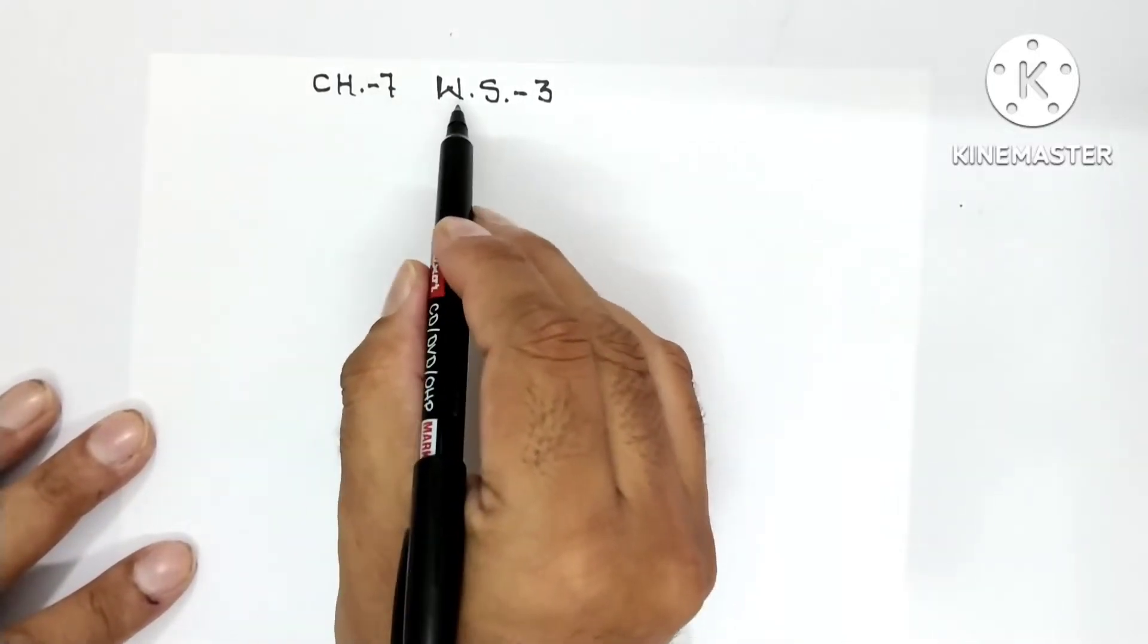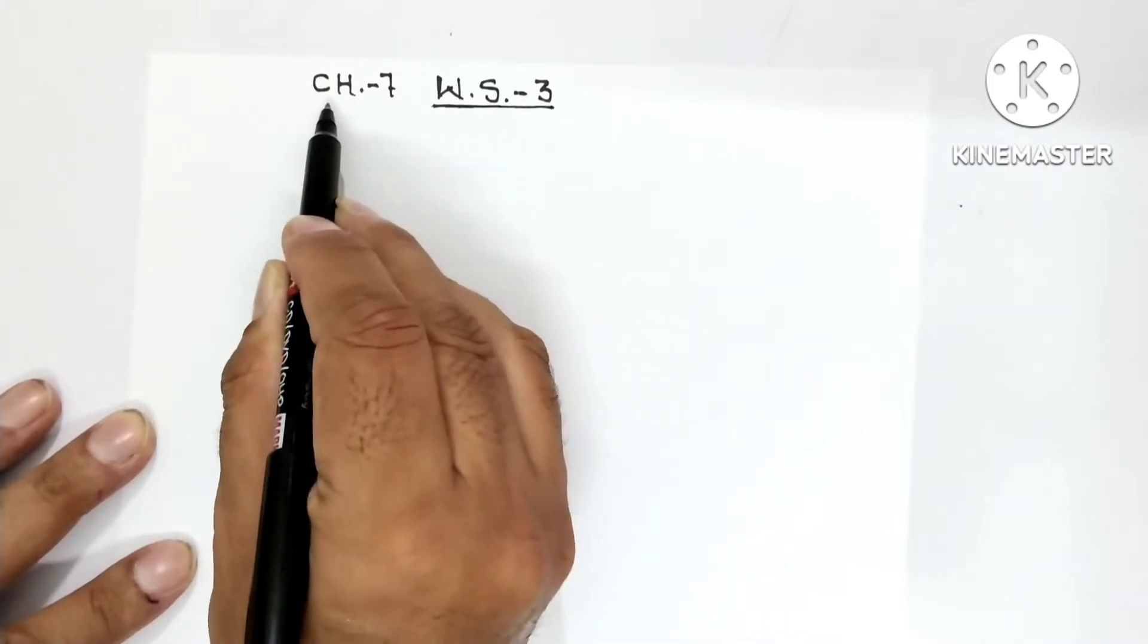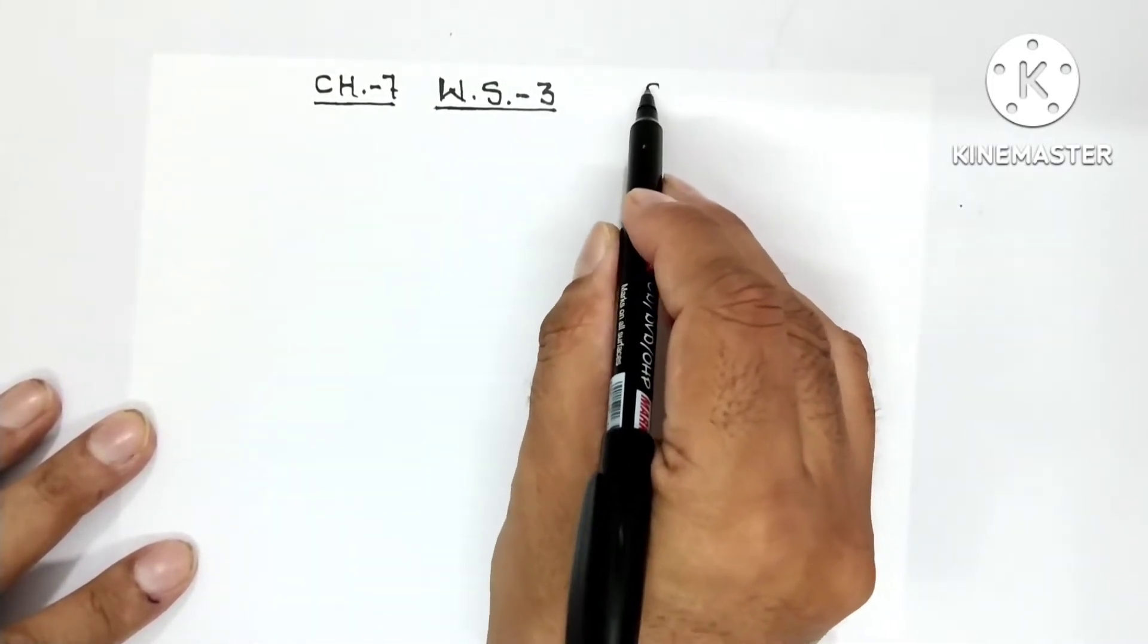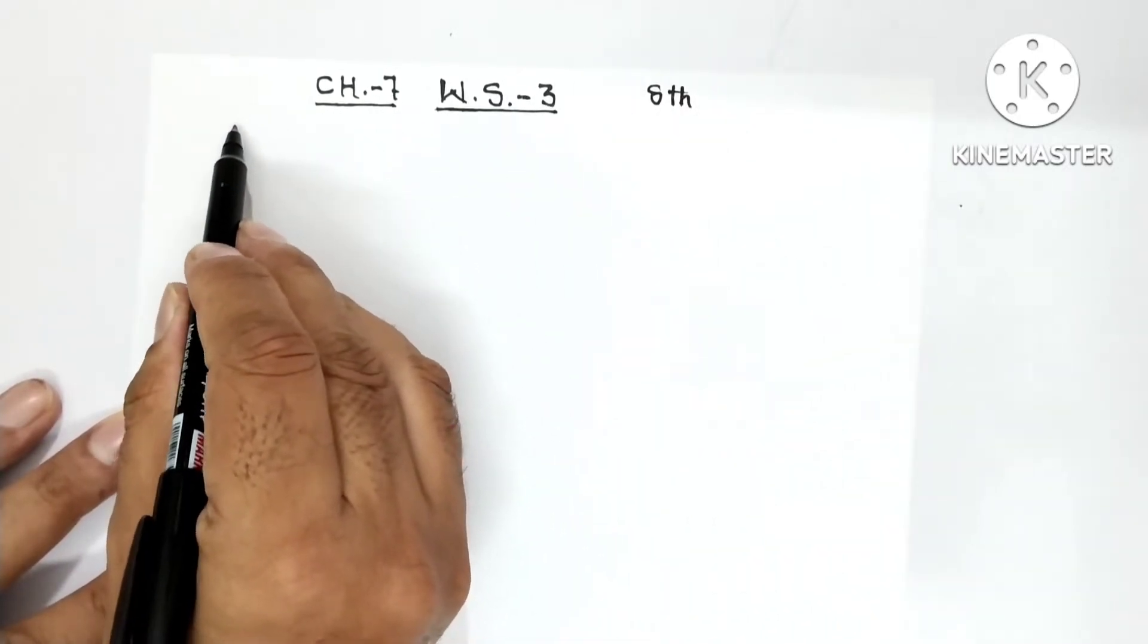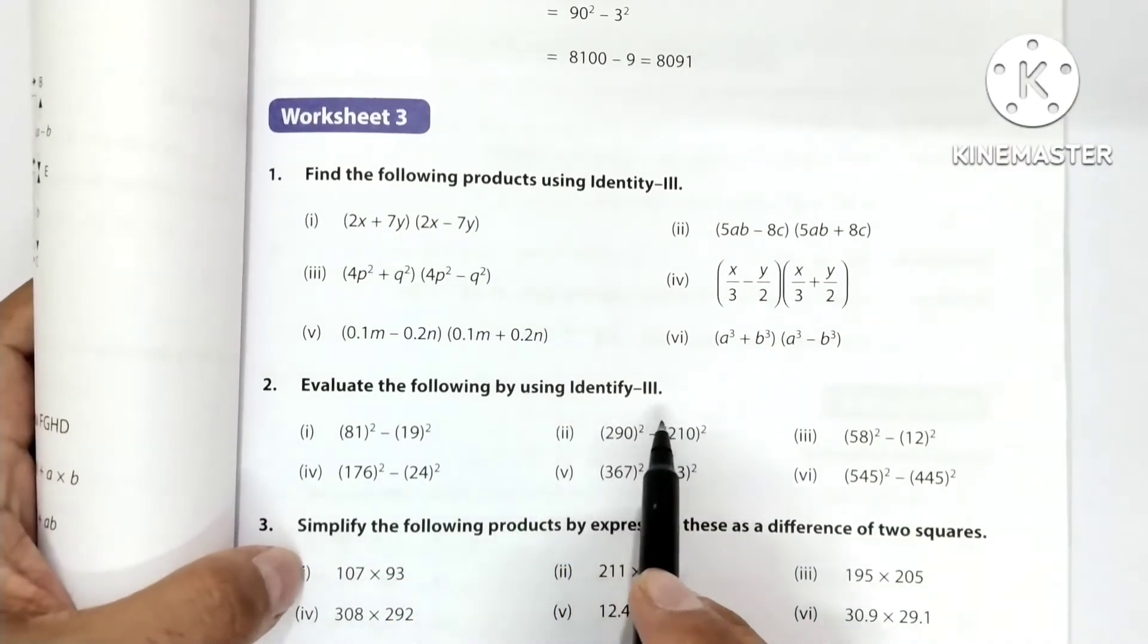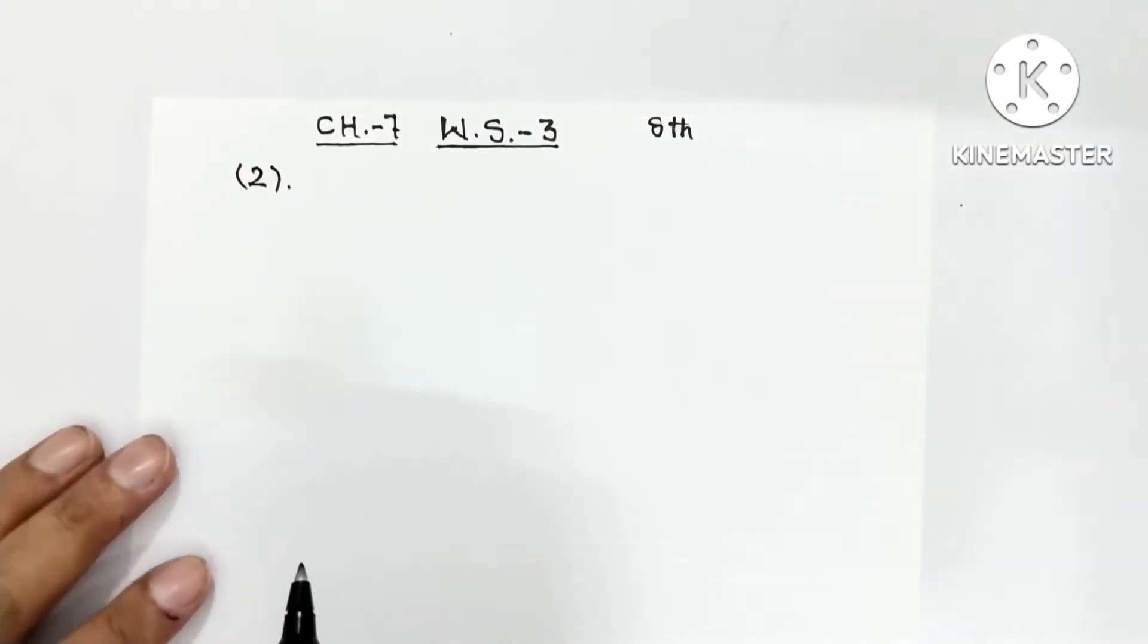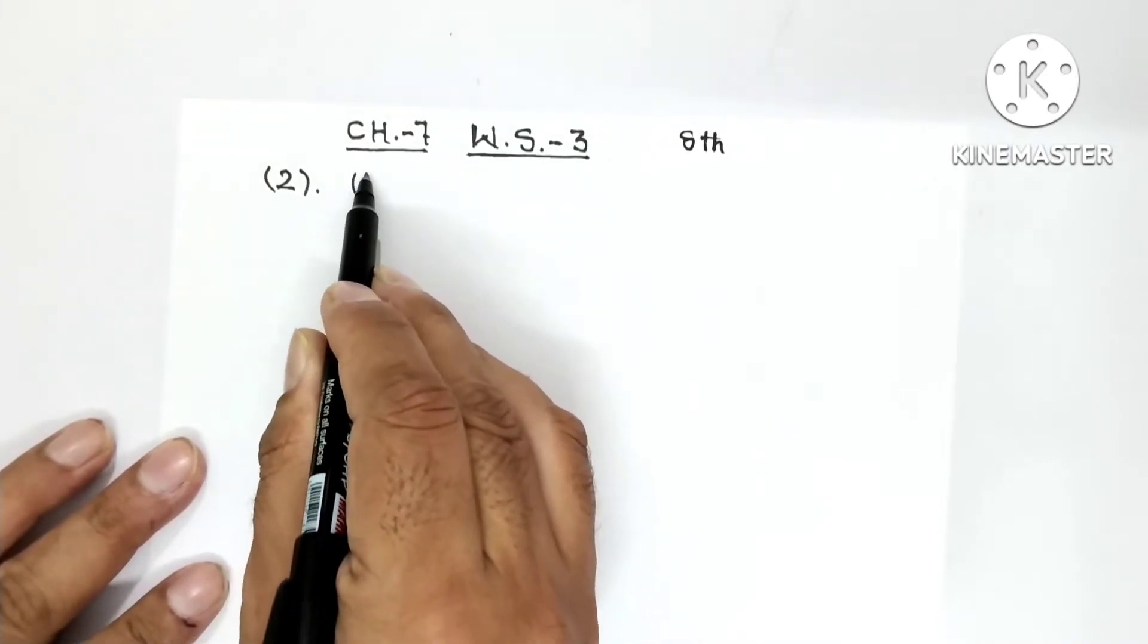Hello everyone, in this video I am doing worksheet number 3, Chapter 7, Algebraic Identities of Class 8, DAV. In this video I am doing question number 2 and it's 6 parts. Evaluate the following by using identity number 3. In your paper it will be written as using the suitable identity. Let's start with part number 1.